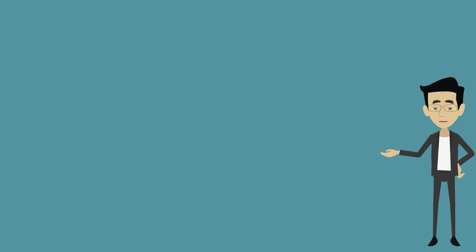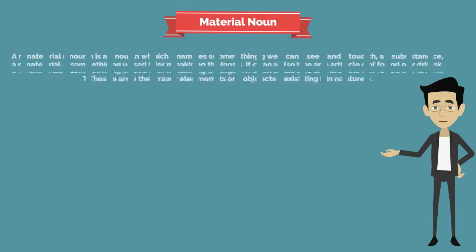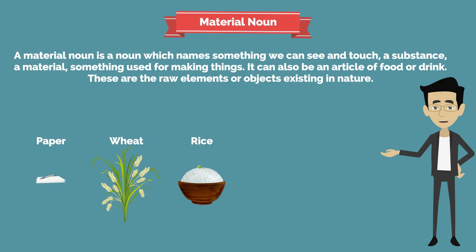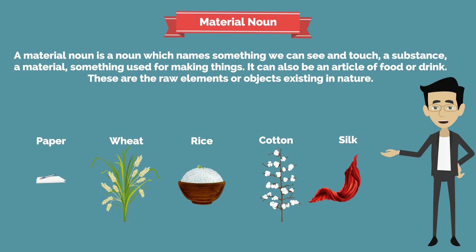The last type is the material noun. A material noun is a noun which names something we can see and touch — a substance, a material, something used for making things. It can also be an article of food or drink. These are the raw elements or objects existing in nature. Examples: paper, wheat, rice, cotton, silk, and so on.